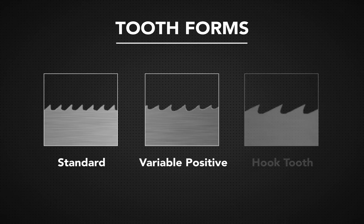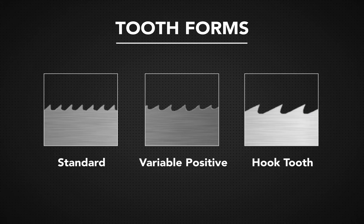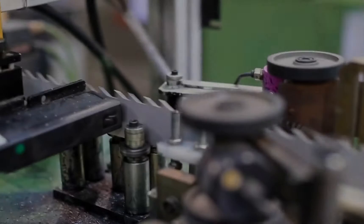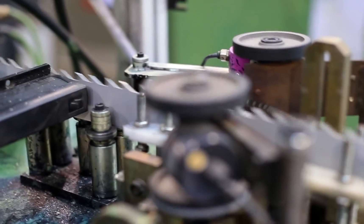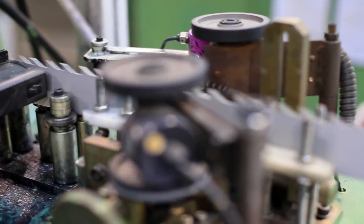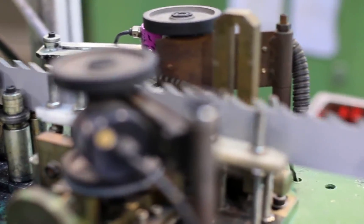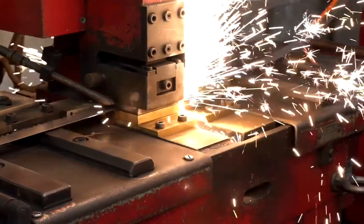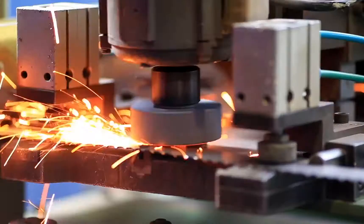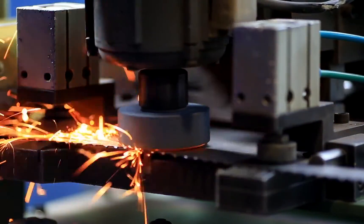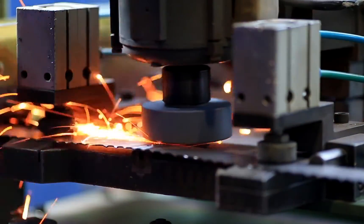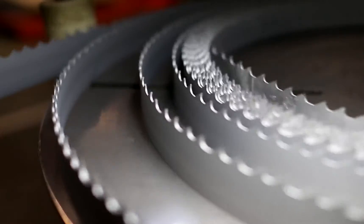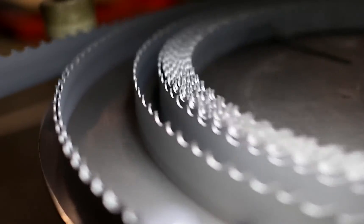Different types of tooth forms contribute to the way saws cut, so innovators have been crafting and experimenting with tooth forms to create saws specialized to different jobs. Even the slightest change in the shape of the tooth can affect performance.